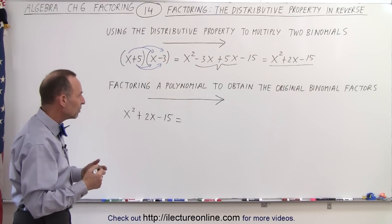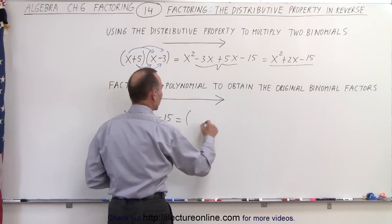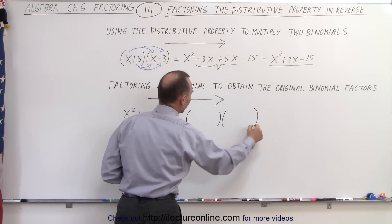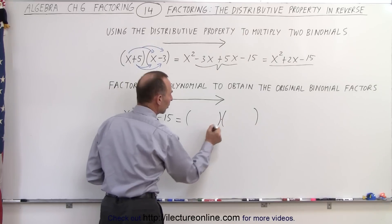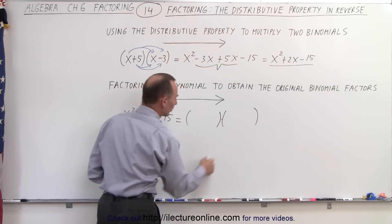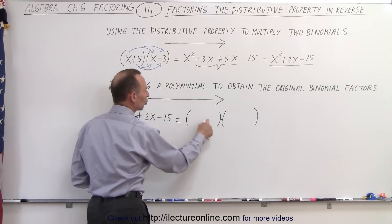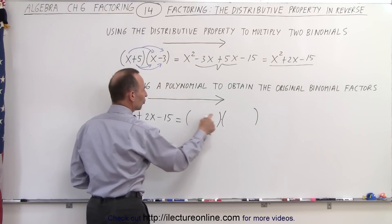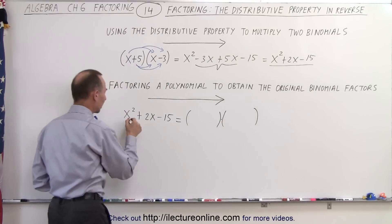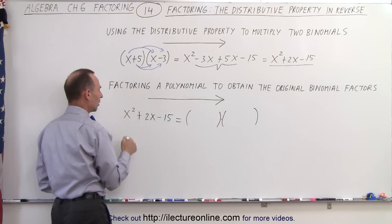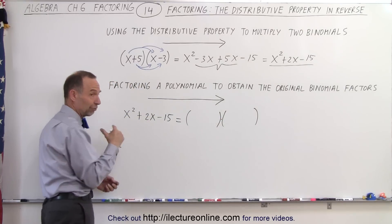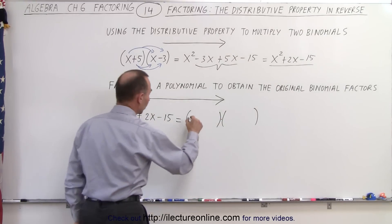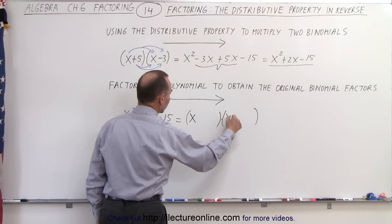So we know we're going to need two binomials, so let's go ahead and put the parentheses down. This trinomial will now be written as the product of two binomials. These binomials will have two terms each. To get the first term in each binomial, we take a look at our very first term right here. Since that first term is x squared, we know we're going to need an x here and an x here.